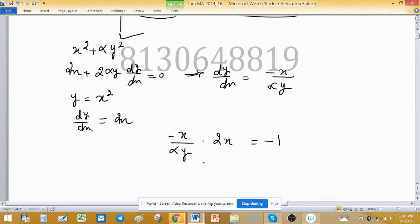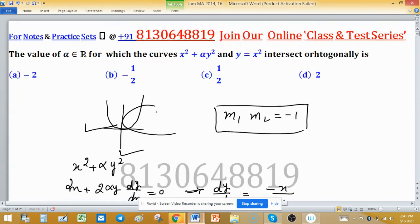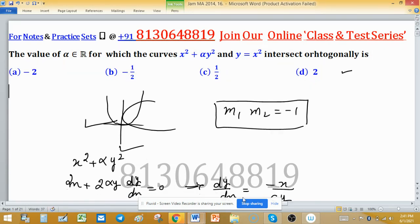This implies that -2x² = -αy. Since y = x², we put αx². Solving, the value of alpha is 2. Option d is correct.